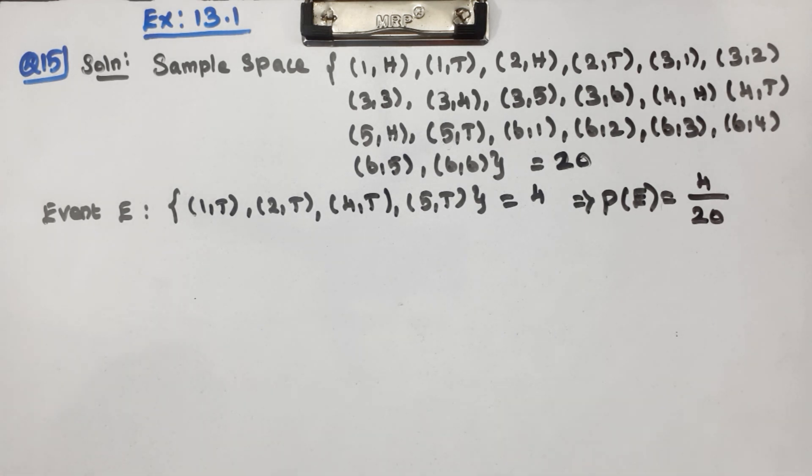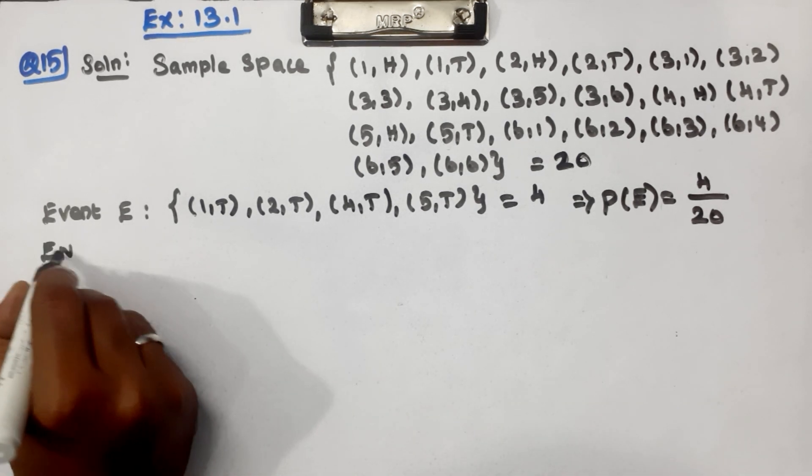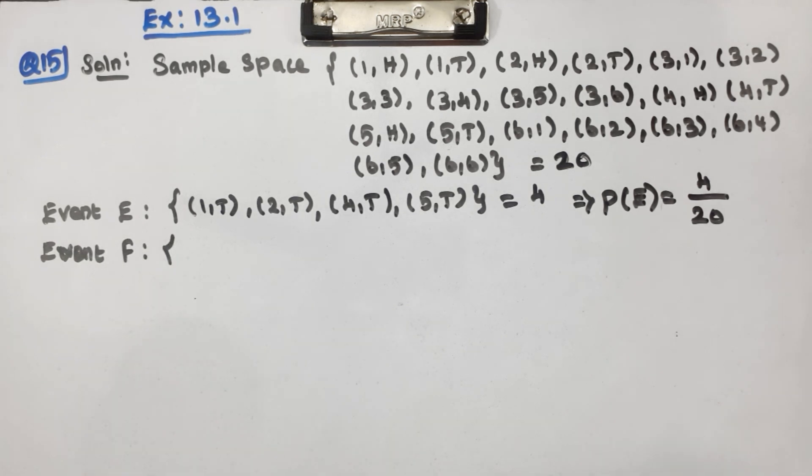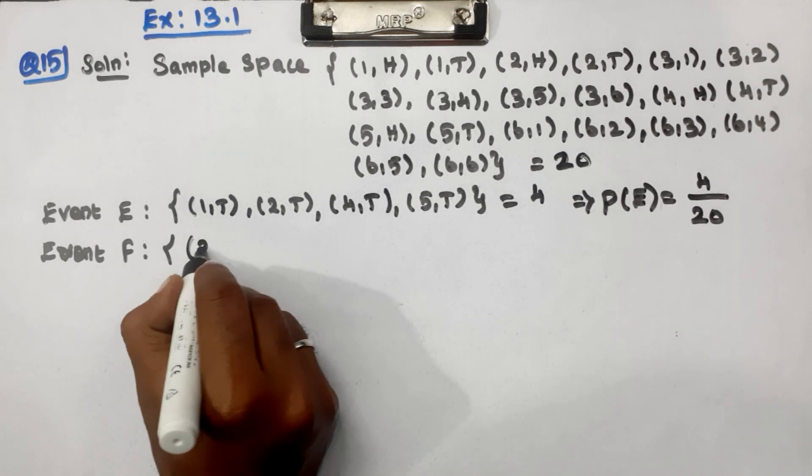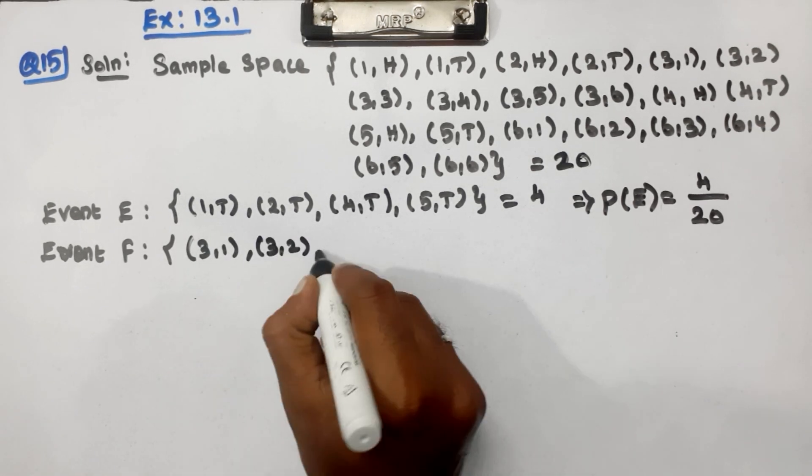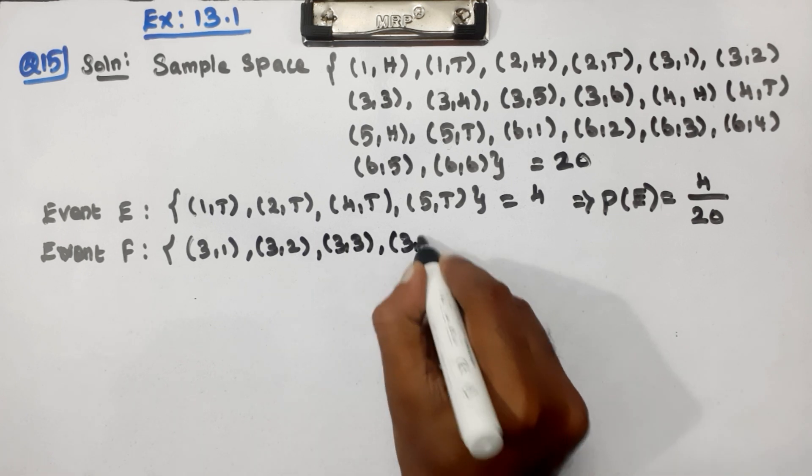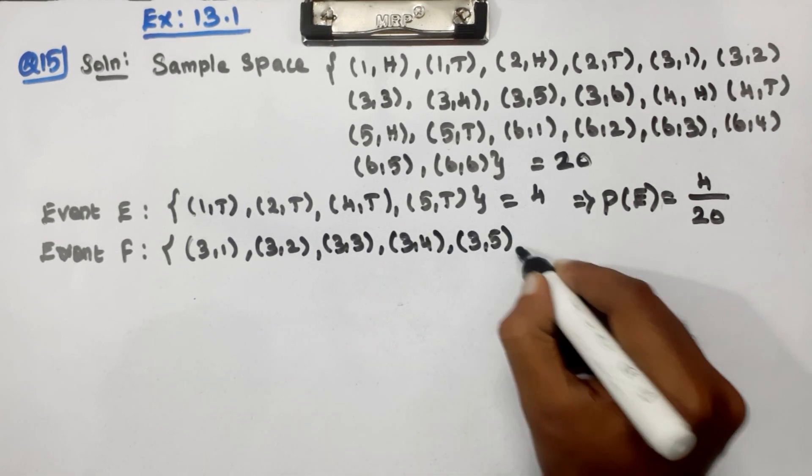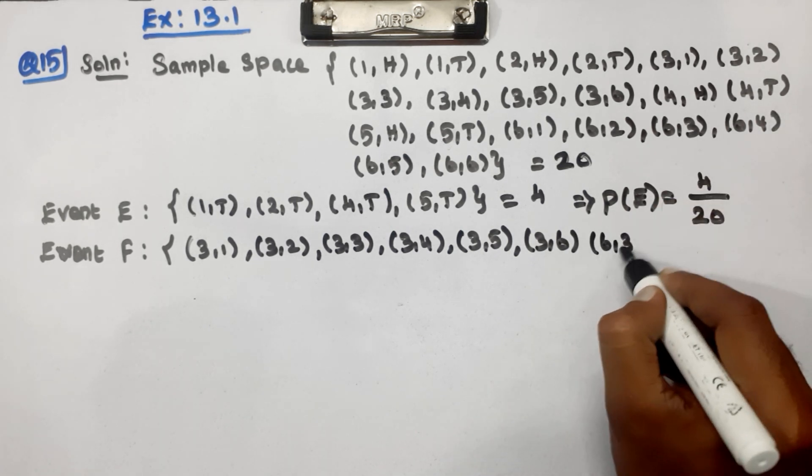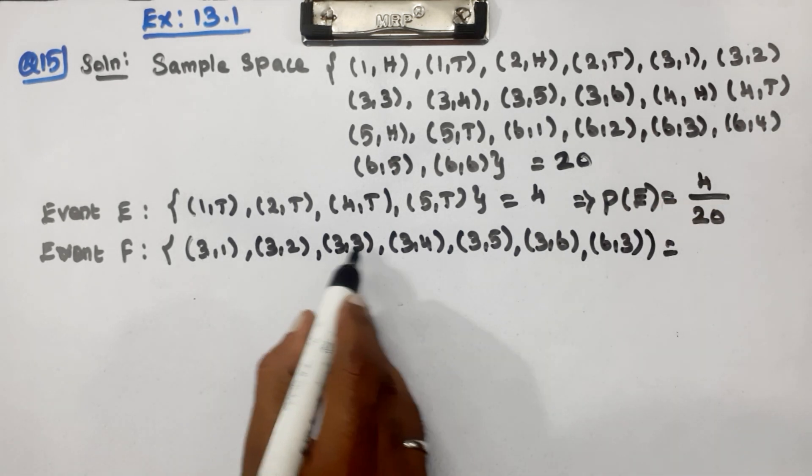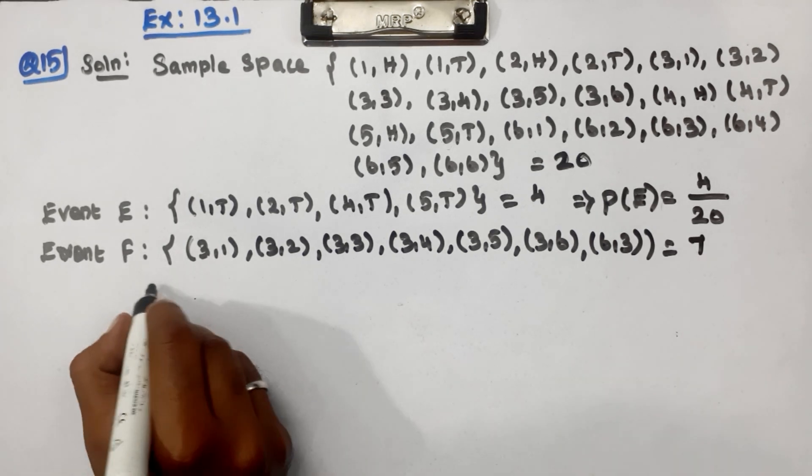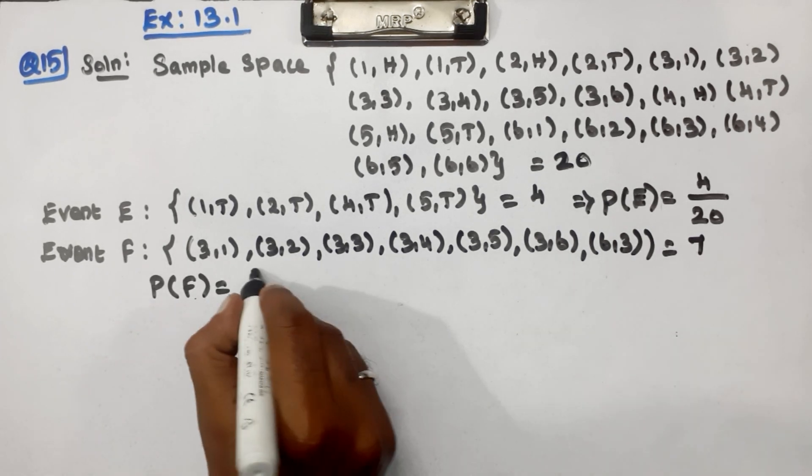Event F: at least one die shows 3. The outcomes are (3,1), (3,2), (3,3), (3,4), (3,5), (3,6), and (6,3). That's 7 outcomes total. Probability of F is 7 by 20.